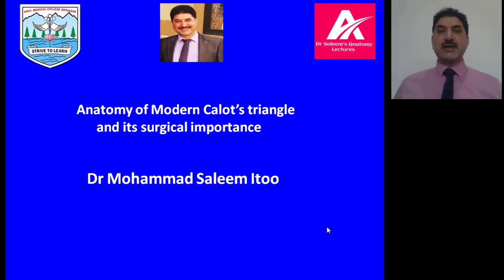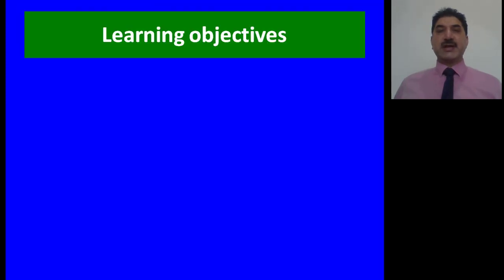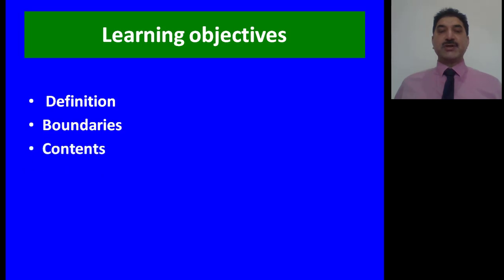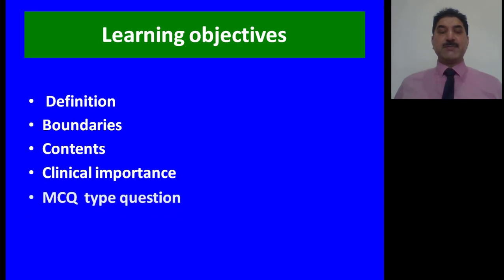Today we are going to discuss the anatomy of the modern Calot's triangle and its surgical importance. The learning objectives for this lecture are: at the end of this session, students should be able to define modern Calot's triangle, name its boundaries and contents, and know the surgical importance of Calot's triangle. MCQ-type questions at the end of the session are for revision and assessment.